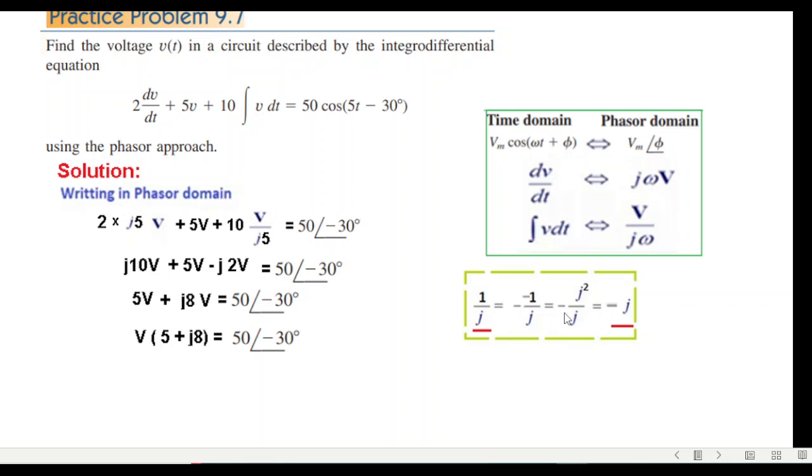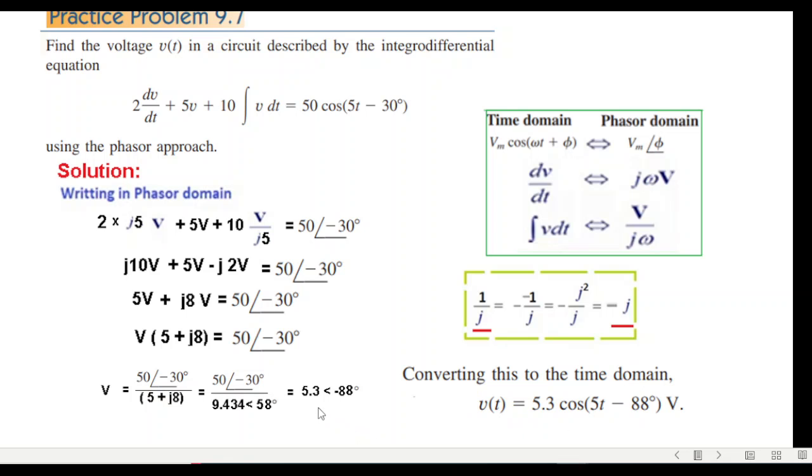We have to manipulate and use the same technique with 1 over j. The final answer in time domain is v(t) equals 5.3 cos(5t minus 88 degrees) volts.